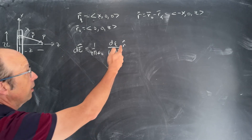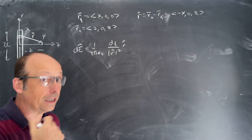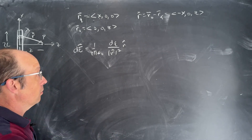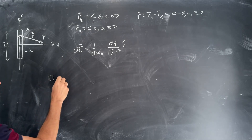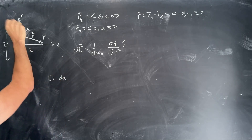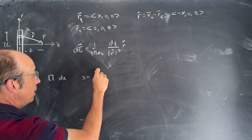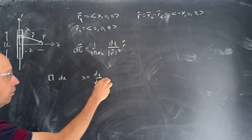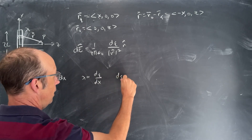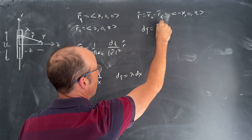We have to find the magnitude of r, find r hat, find dq, and then integrate. Let's start with dq. My little piece has a length dx. If this has a uniform linear charge density lambda, then lambda equals dq over dx. So dq equals lambda dx. That's important — I'm going to integrate over the x variable, so I need dx as my integration variable.